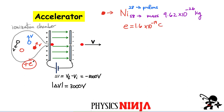The elementary charge is 1.6 × 10⁻¹⁹ coulombs. The different isotopes will have different masses, but they all have the same charge. We then allow some of these atoms to enter the accelerator region, which consists of two parallel plates connected to a power supply. In this case, the potential difference between the plates is 3,000 volts — the first plate is positively charged and the second is negatively charged.